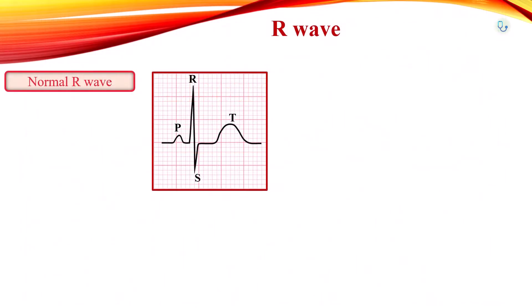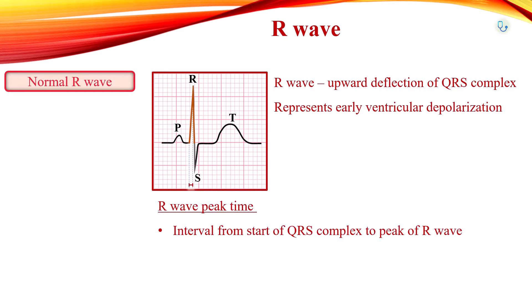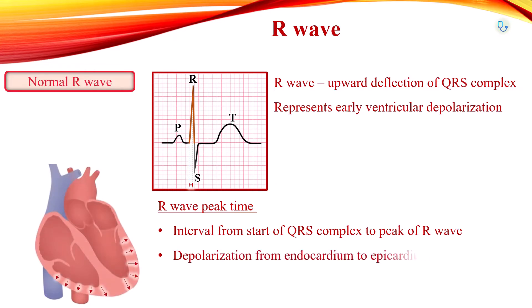R-wave is the upward deflection after P-wave and part of the QRS complex. The R-wave represents early ventricular depolarization. R-wave peak time is the interval from the beginning of the QRS complex to the peak of the R-wave, which corresponds to the time taken for depolarization to spread from the endocardium to the epicardium.